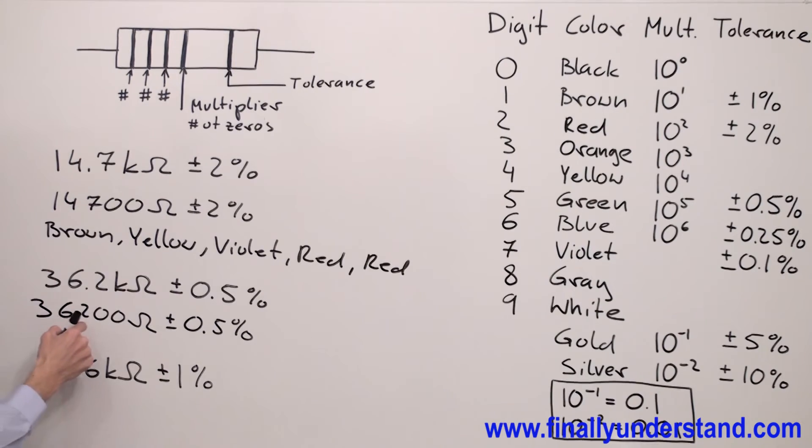These three digits are going to be represented by these three bands. Number of zeros is represented by the fourth band. Three is orange. Six is blue. Two is red.